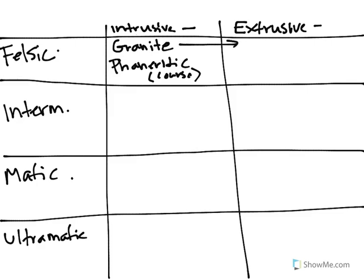What is granite's extrusive equivalent? That is rhyolite. And because it's on the outside of the earth, does it cool quickly or slowly? Hopefully you said quickly. So that is aphanitic. Remember, aphanitic texture is fine-grained.